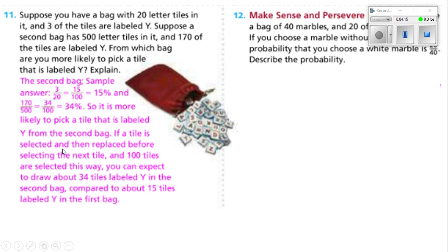If a tile is selected and replaced before selecting the next tile, and 100 tiles are selected this way, you can expect to draw about 34 tiles labeled Y from the second bag compared to 15 tiles labeled Y from the first bag. We had to make the denominator the same to compare — multiplying 20 to get 100, and dividing 500 by 5. Whatever we divided or multiplied on the bottom had to be applied to the top to get our numerator.